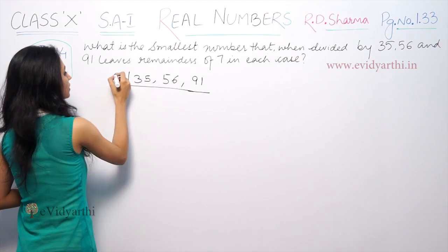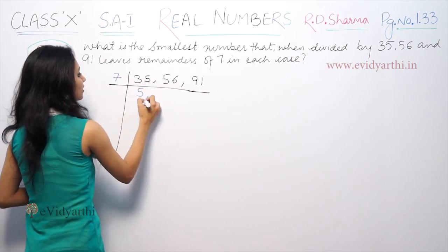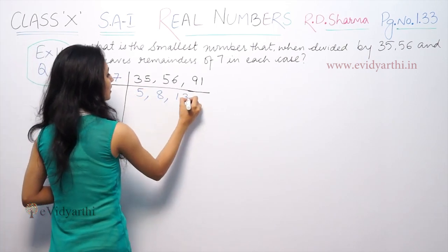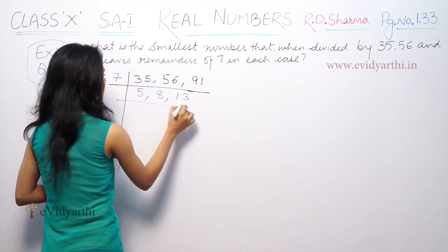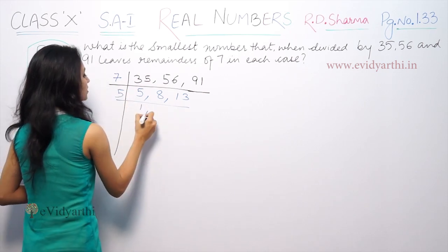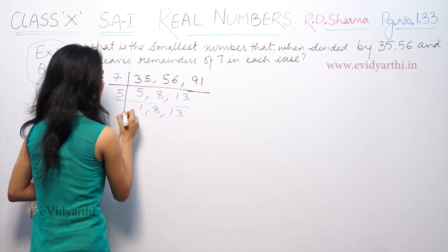So we perform the prime factorization. 35 = 7 × 5. 56 = 7 × 8, that is 7 × 2 × 2 × 2. 91 = 7 × 13. So the factors are 5, 8, and 13.